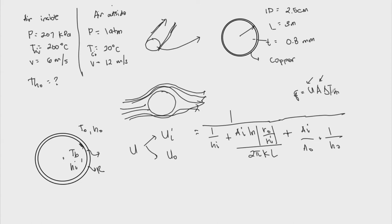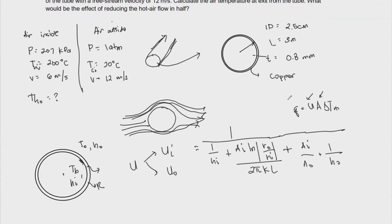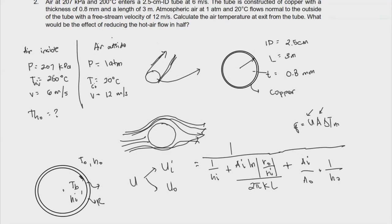To answer that, if we're looking for Q, we can get the mass flow rate from the given velocity and the inner diameter. So we can determine the mass flow rate. But if we look at the ΔT needed — the difference between the inlet and outlet temperatures of our hotter air — we can see that we don't have any outlet temperature because that's what we're looking for. So we're at a dead end for this problem.